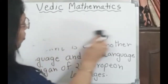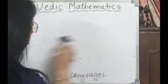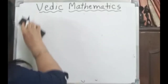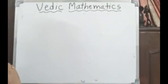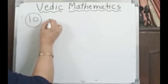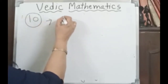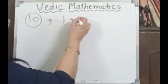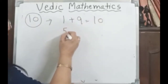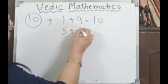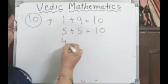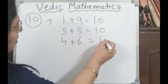First, you all know the numbers — one, two, three, four, five, six, seven, eight, nine, ten. So just see the combination of ten: one plus nine is ten, five plus five is ten, four plus six is ten.